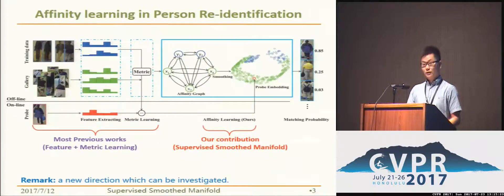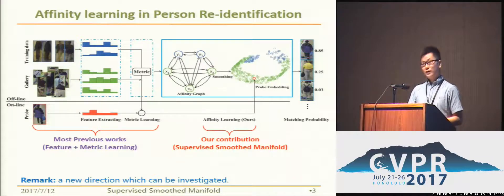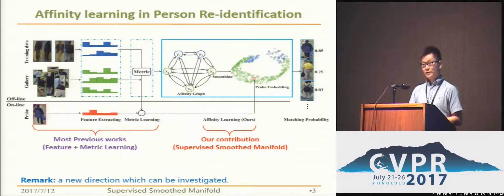Most of the works in personal ratification focus on two parts, and that is feature learning and metric learning. Unlike those methods performed in the metric space, we address this task from another perspective, that is affinity learning. Our figure shows a method called Supervised Smooth Manifold, which can be a post-processing procedure or a ranking component for those methods.